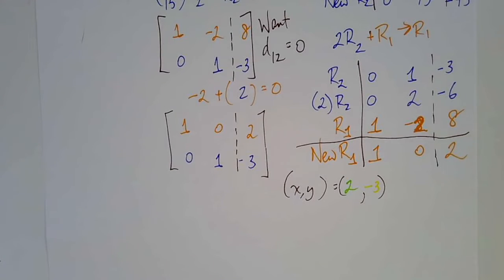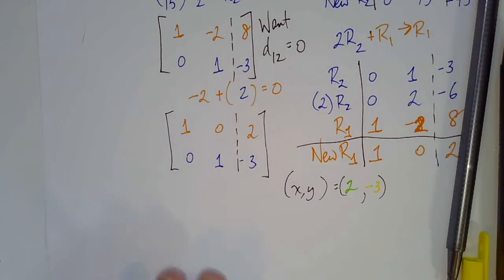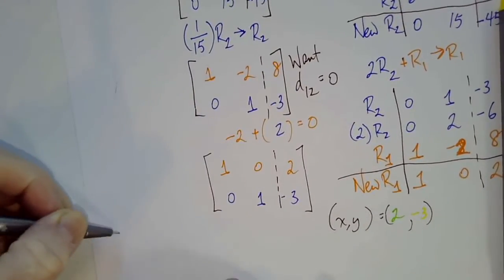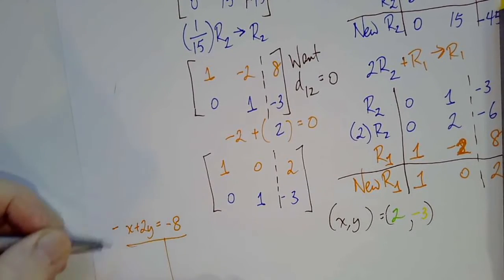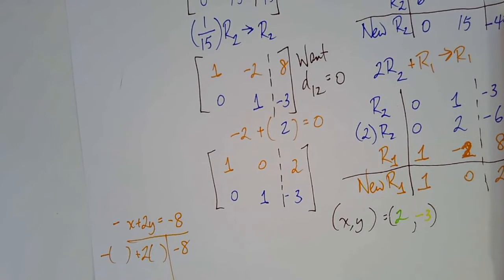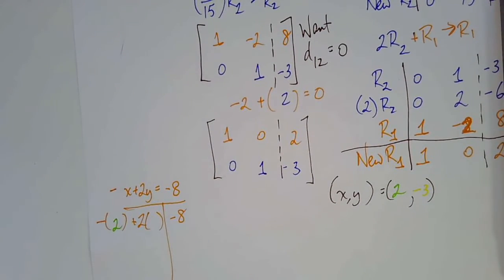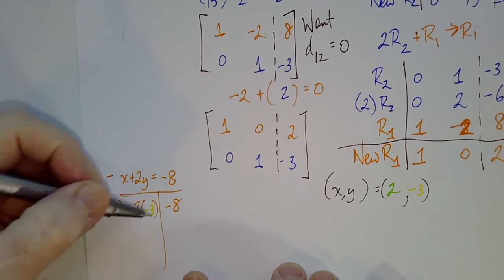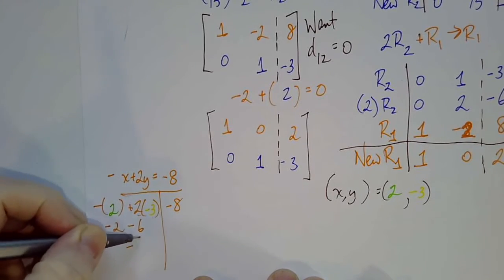And now let's check in the original. The first equation was negative x plus 2y equals negative 8. And we are going to substitute 2 for x and negative 3 for y. Negative 2 is just negative 2, 2 times negative 3 is negative 6, and negative 2 minus 6 is indeed negative 8.